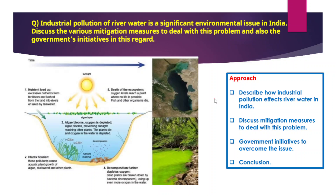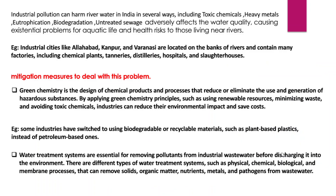These pollutants increase the temperature of the water, add a lot of nutrients, and consist of harmful chemicals that threaten or endanger marine organisms and change the ecosystem of existing rivers. All these problems are due to industrial effluents being released without the wastewater being properly treated. The approach to this question is very simple — describe how industrial pollution affects river water in India in the introduction, then write the mitigation measures, and then the government initiatives.